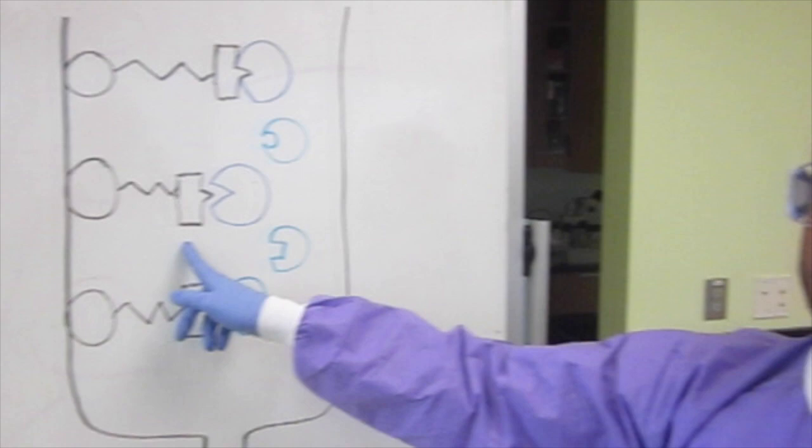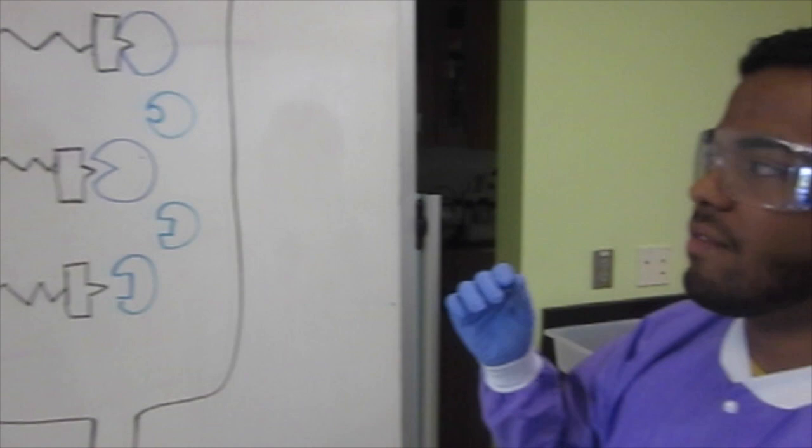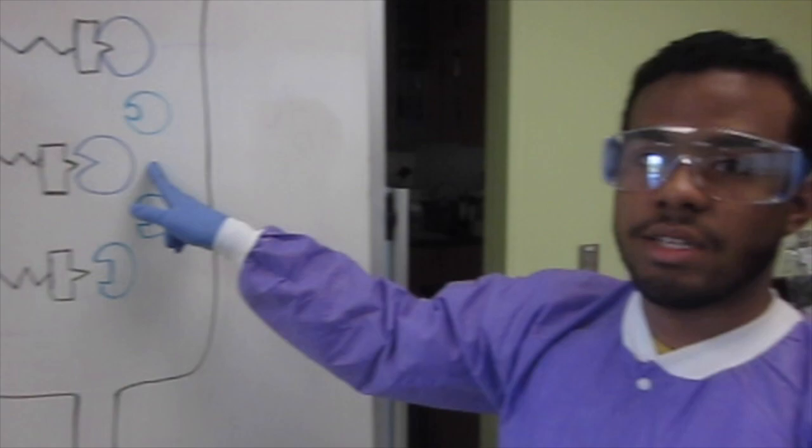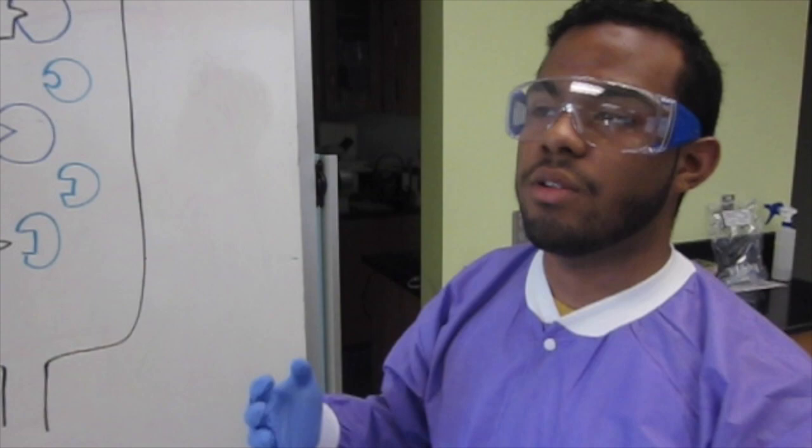We also have to remember that this cell lysate contains many non-competitive and non-binding proteins. We're going to use gravity to maintain a slow enough flow rate so we can capture our GST Campari. Then we'll wash and elute it, and in our elution fractions we should ideally have just GST Campari.